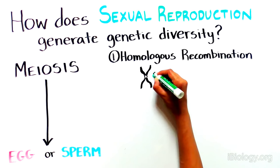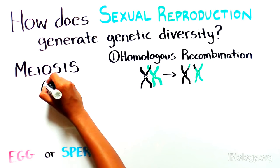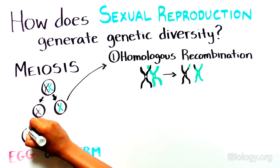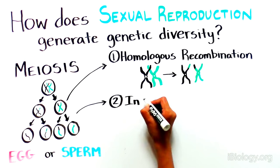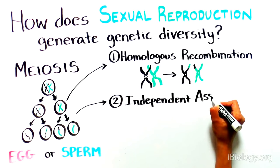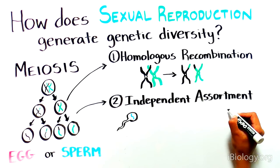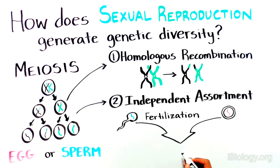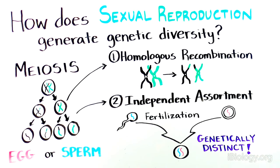First is recombination between homologous chromosomes. Recombination mixes maternal and paternal alleles and results in novel gene combinations on each chromosome in each generation. The second is the independent assortment of chromosomes, which generates unique combinations of chromosomes in each gamete. During fertilization, one genetically unique sperm and one genetically unique egg randomly combine to form an offspring that is genetically distinct from its parent.